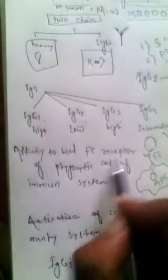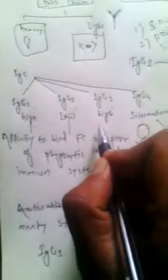The affinity to bind with F-C receptors of phagocytic cells, or immune cells, varies. IgG1 has high affinity, while IgG2 has low affinity to bind with F-C receptor.